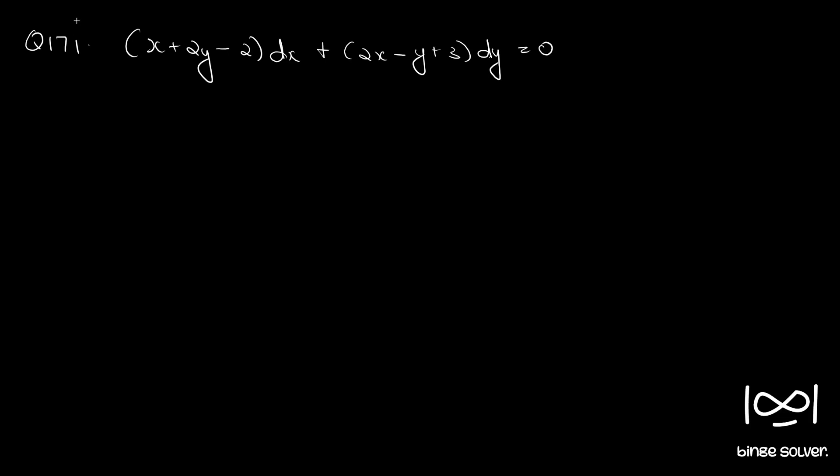Question number 171. x plus 2y minus 2 dx plus 2x minus y plus 3 dy equal to 0.